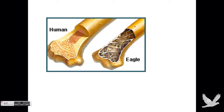This is the difference between an eagle's bone and a human bone. As you can see, bird bones are hollow, unlike humans, whose bones are filled with marrow.